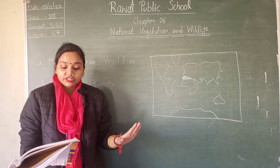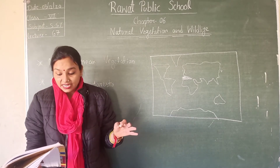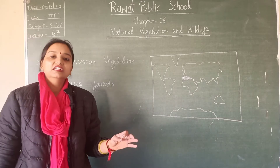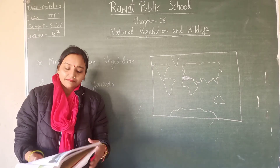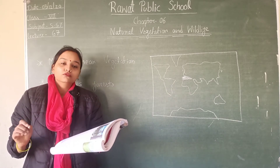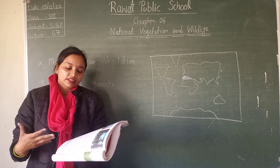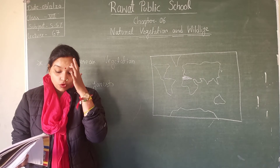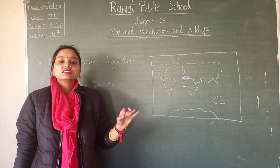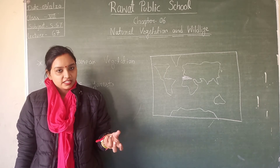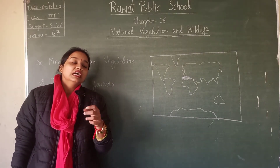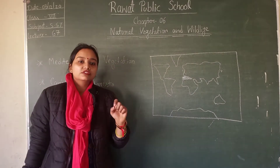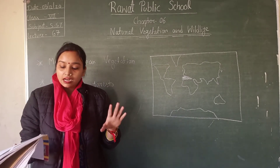Much of the natural vegetation of these areas has been removed by inhabitants for large-scale cultivation of fruits and nuts. Citrus fruits like oranges, lemons, lime, peaches, plums, cherries, figs, and apricots are widely grown. Nuts such as almonds and walnuts are also largely cultivated. Citrus fruits and nuts are the most prominent crops of Mediterranean vegetation.